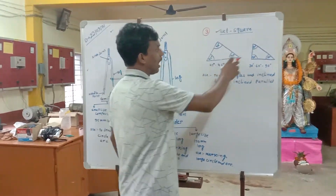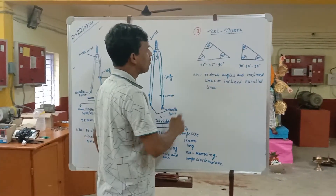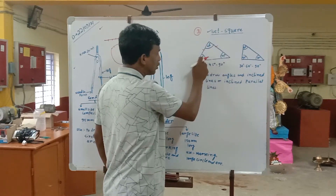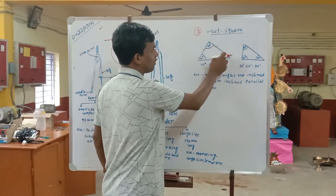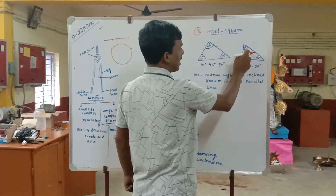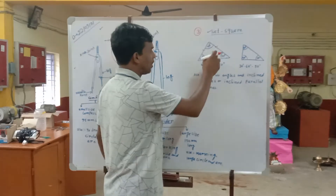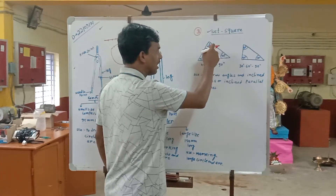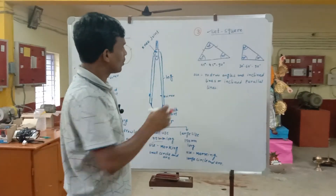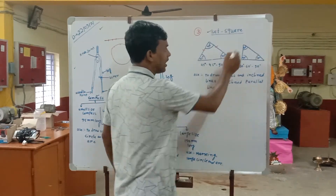The set square is an isosceles triangle. Its sides are equal and the angles are equal — the angles are 45 degrees and 45 degrees, with the remaining angle being 90 degrees. The other set square has angles of 60 degrees, 30 degrees, and 90 degrees. The angles of any triangle are equal to 180 degrees, so 90 + 60 + 30 equals 180 degrees.